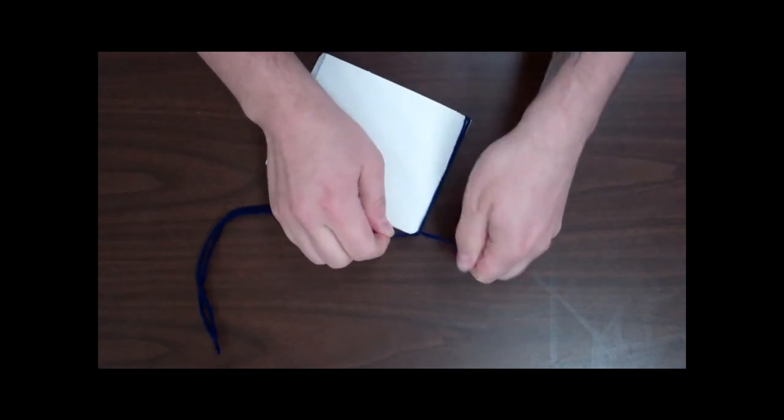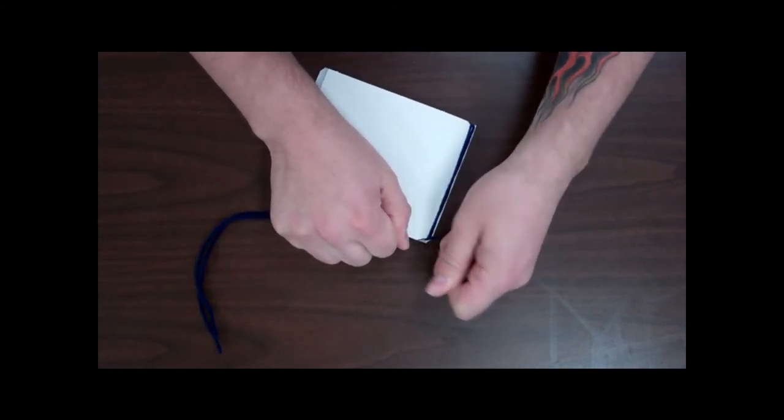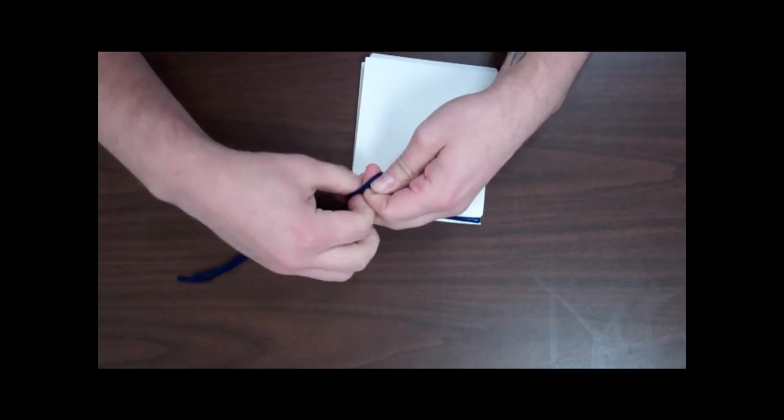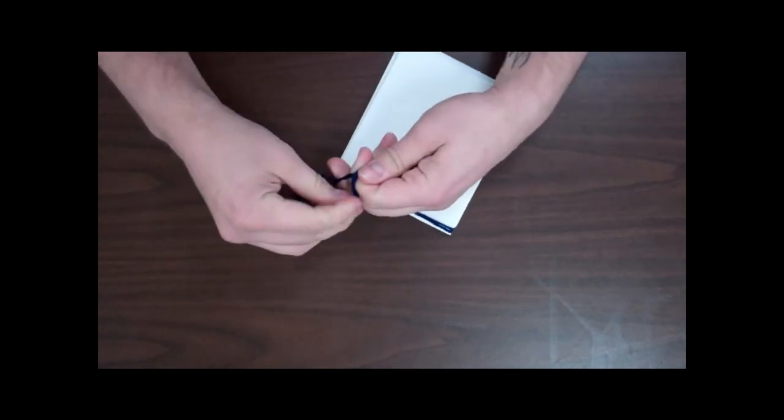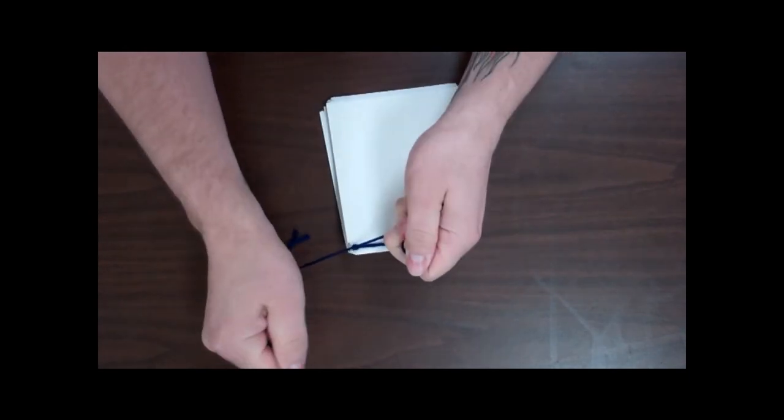Because the cover is cut slightly larger than the pages, you can really put a lot of pressure on there to bend the paper down, and that's what will hold the pages in place. You can add a second knot just for security.